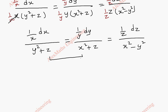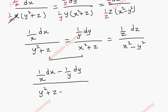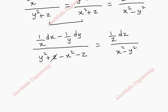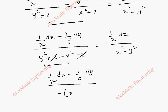Using the ratio property we subtract: (1/x)dx − (1/y)dy in the numerator, and the denominator becomes y² + z − x² − z = y² − x². We can cancel z and −z. Taking −1 common from the denominator gives −(x² − y²), which cancels with the right-hand side denominator (x² − y²), carrying the minus sign across.